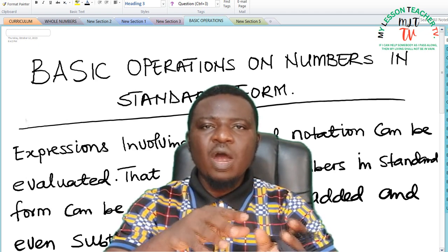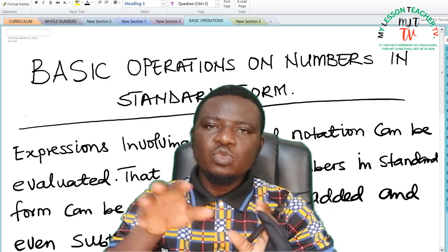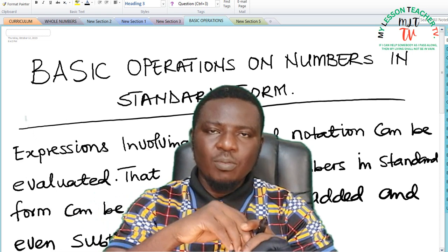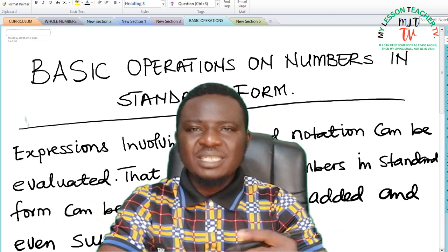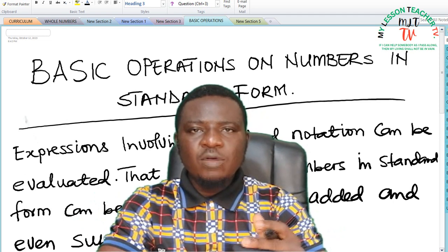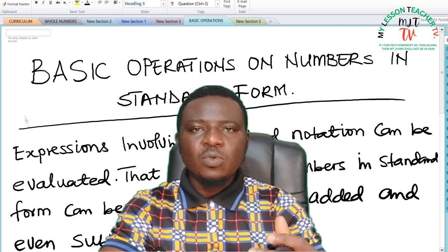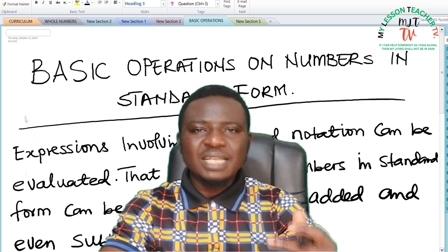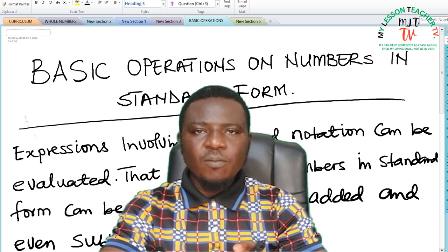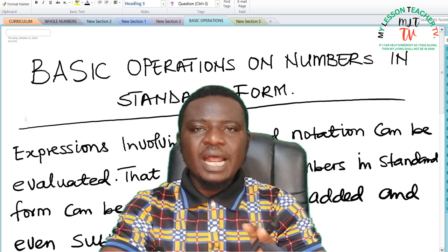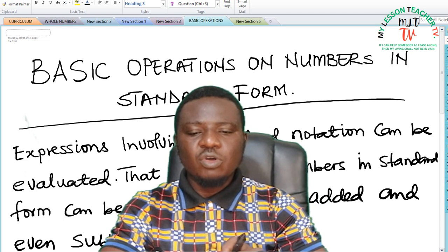We also looked at examples on how we can express numbers in standard form back to whole numbers and back to decimal numbers. So in today's class, we shall be looking at the basic operations on numbers in standard form. Having known how to express these numbers in standard form, what do you do with them? We said one of the reasons why we express numbers in standard form is to make it easier for us to manipulate these numbers. We shall learn how to carry out the basic operations of addition, subtraction, multiplication, and division of numbers.